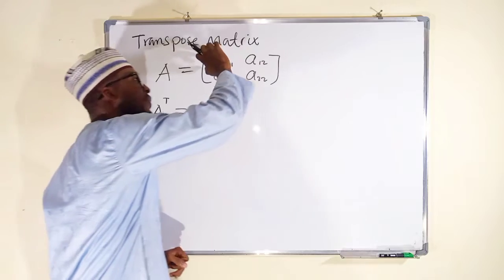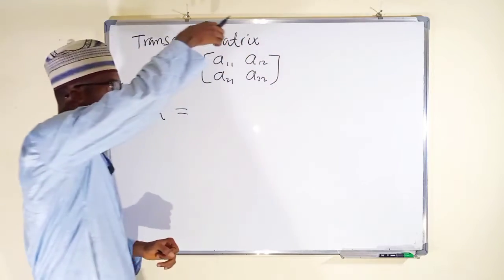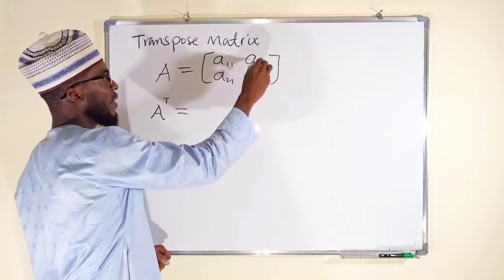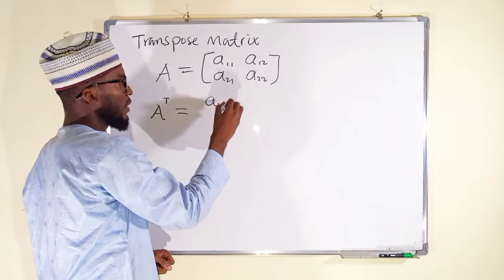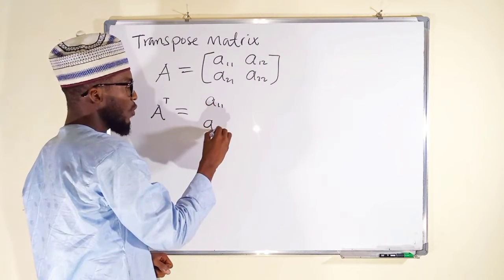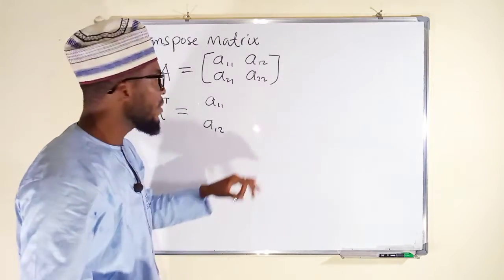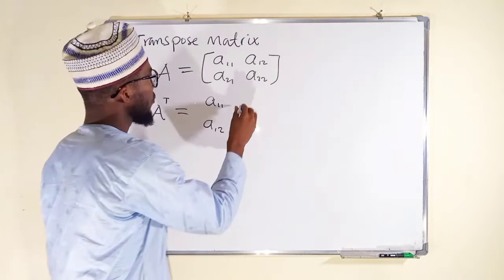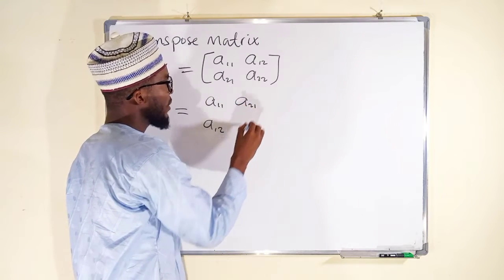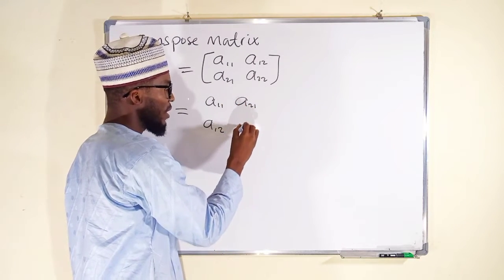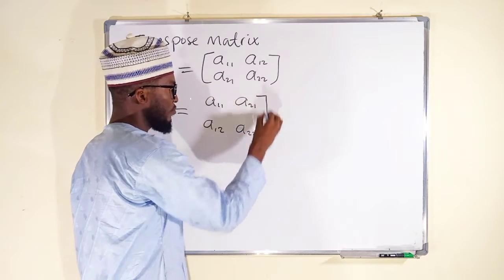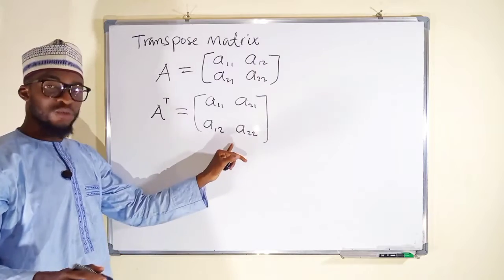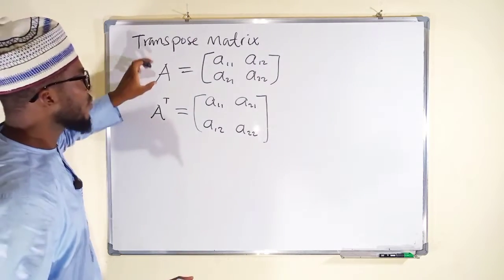We are going to take the first row and transform it into the first column of the new matrix — we have A11, then A12. Then take the second row and transform it as the second column — we have A21, then A22. This new matrix is the transpose of the original matrix.